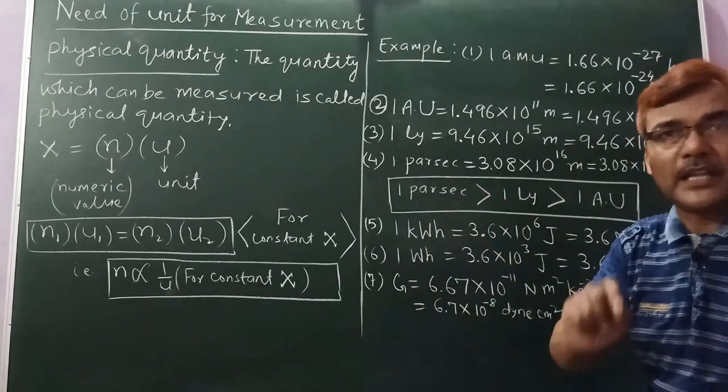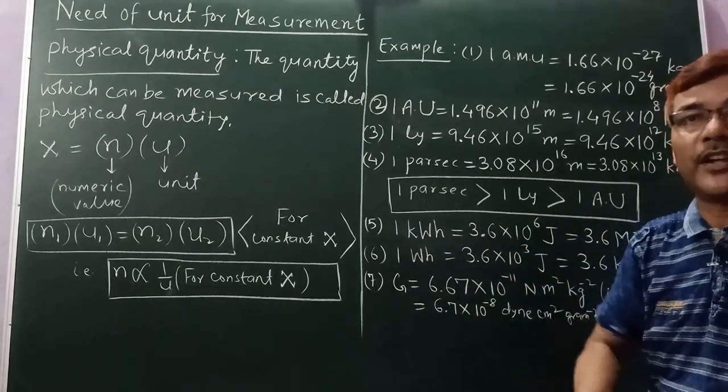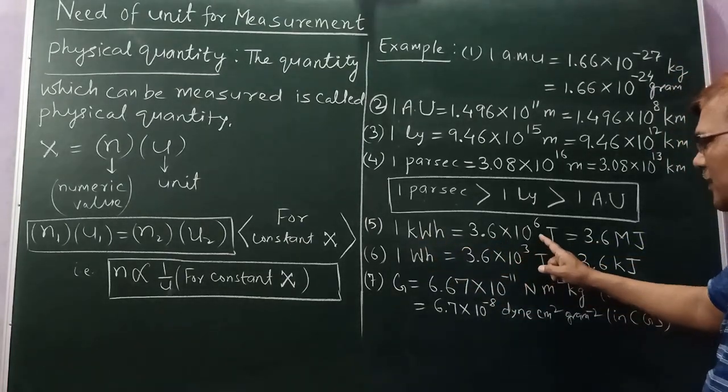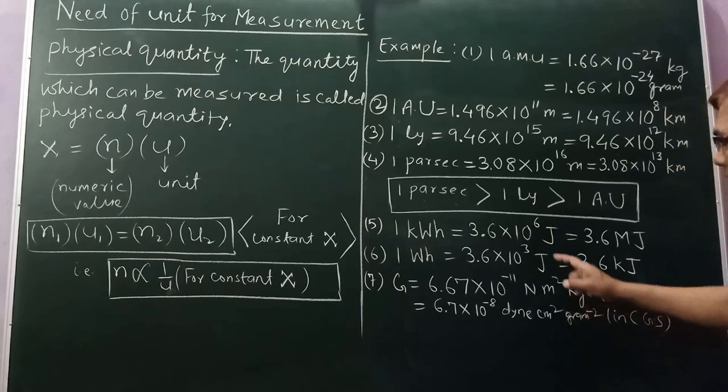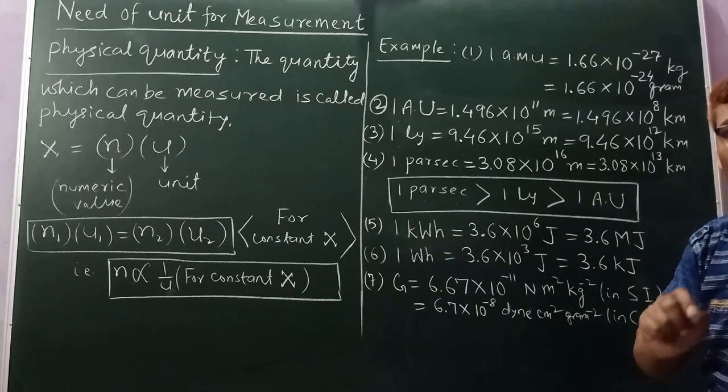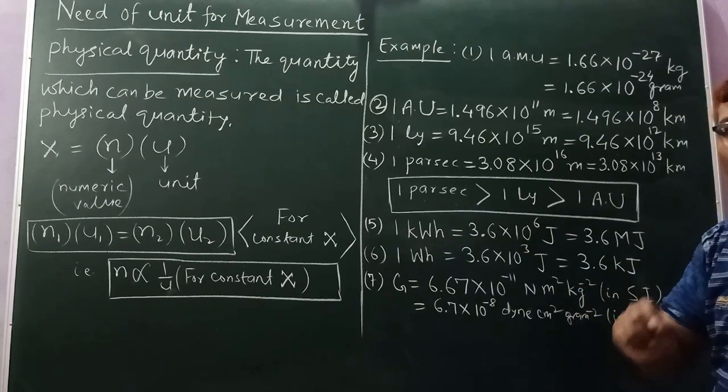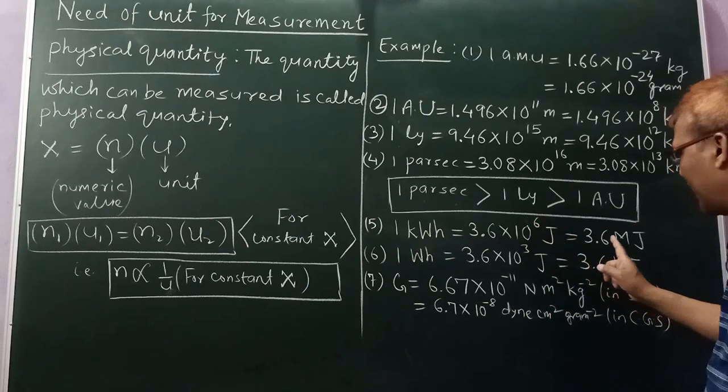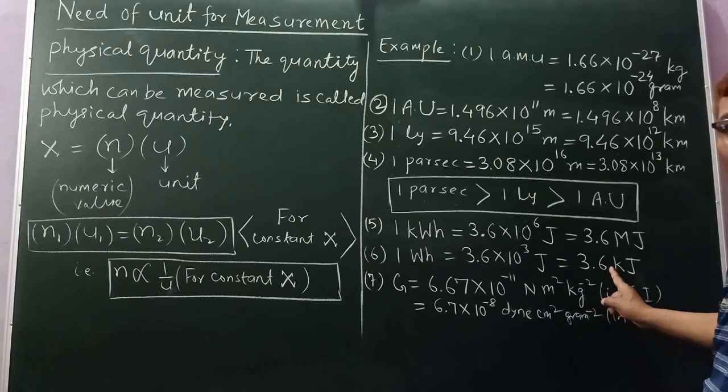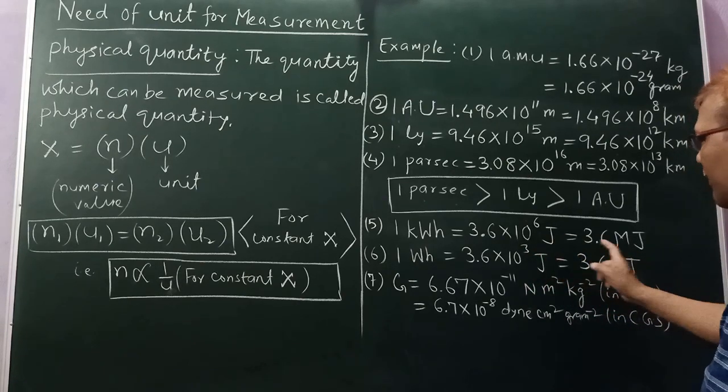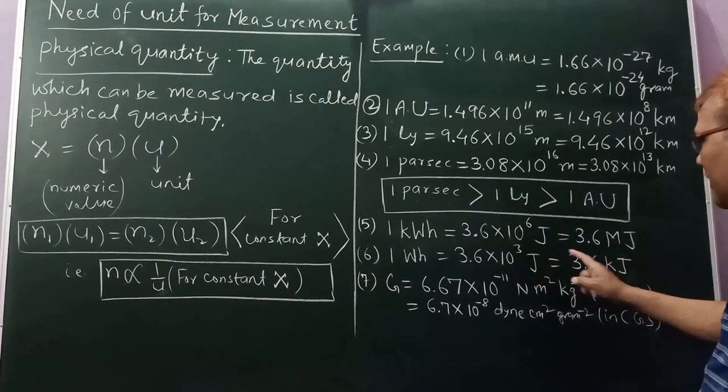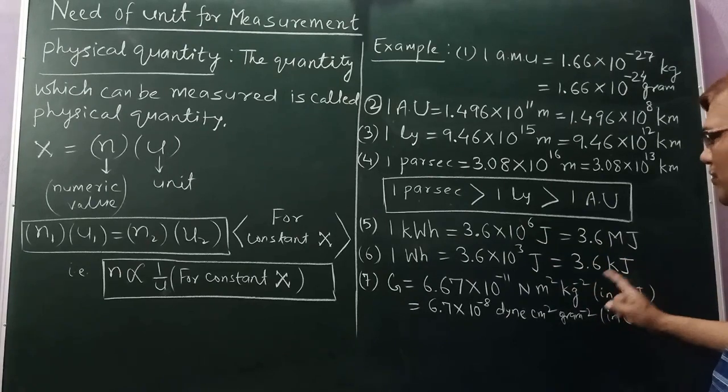But I am telling this additionally to update your knowledge. Now see, one kilowatt hour is 3.6 into 10 to the power 6 joule. If we use kilo for 10 to the power 3, then you see the unit has changed. Here it is 3.6 kilojoule, and here it is 3.6 into 10 to the power 6 joule.